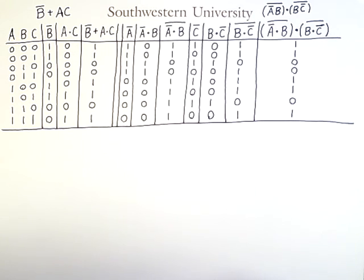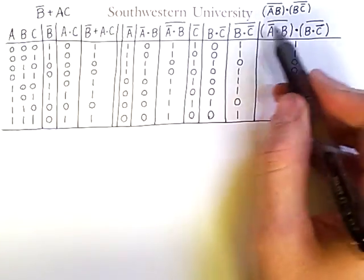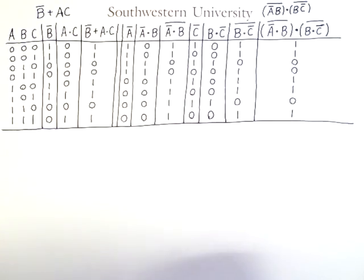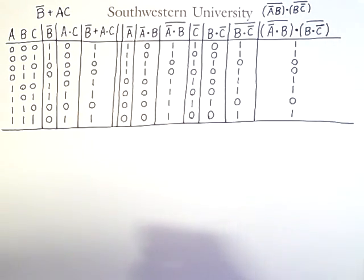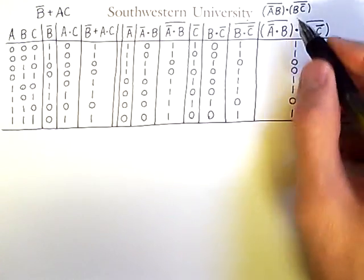However, what will be shown now is how to show these expressions are equivalent using the logical identities we learned in a previous video. This sequence of operations will constitute a proof that this expression is equivalent to this expression. I will be using justifications for each step and the level of detail will be a bit more than is typically necessary since this is one of the first proofs you've seen of this type. I will start with the more complicated expression.